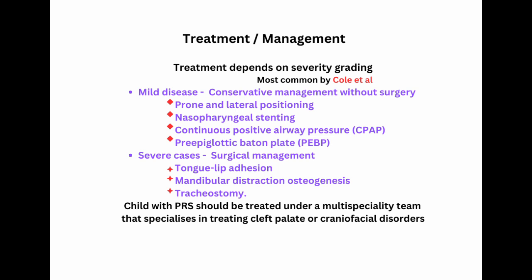Treatment depends upon the grade of the disease based on severity. The most common classification system was developed by Cole et al. and grades from 1 to 3, from mild to severe. Mild cases are treated with conservative management without surgery. Conservative measures include prone and lateral positioning to allow gravity to pull the tongue anteriorly and improve airway obstruction, nasopharyngeal stenting to keep the airway open, CPAP, and a pre-epiglottic baton plate to decrease apneic events and improve weight gain.